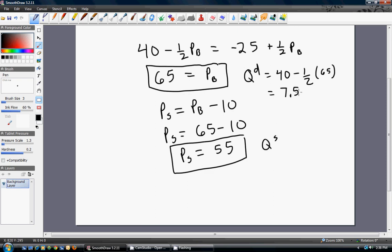So that should be the equilibrium quantity if we did our math right. The way to verify this is go ahead and take this $55 and plug it back into the supply equation. And indeed we get an equilibrium quantity of 7.5.